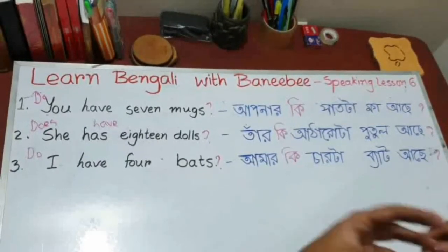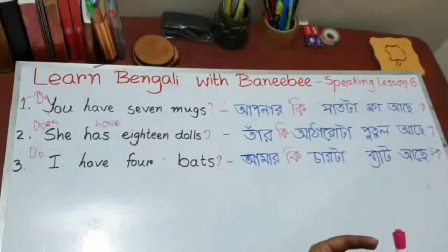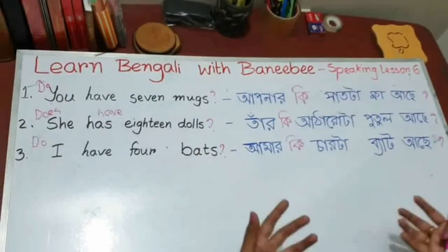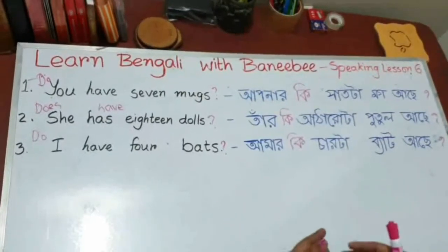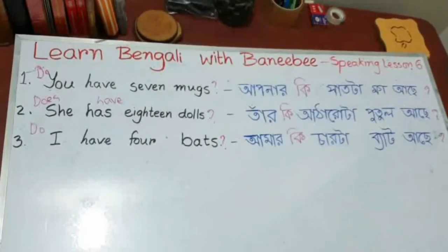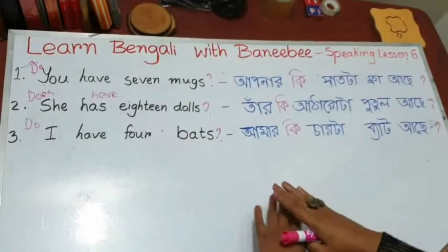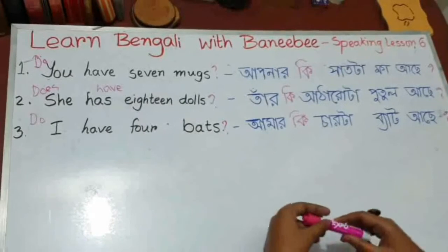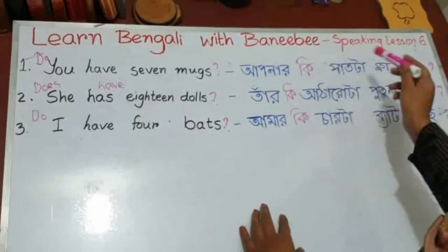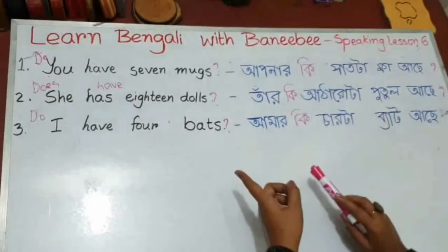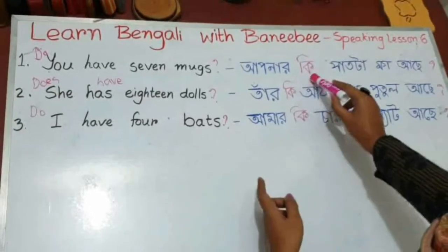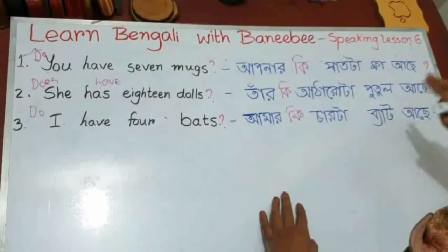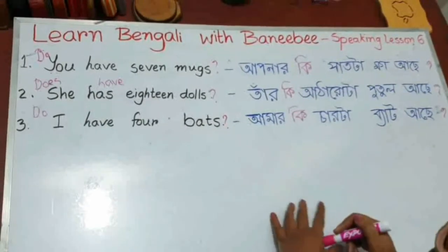So now you know how to talk about owning something — like you have something, I have something, he has something. You already know how to make those statements, and also how to ask questions with the same type of sentences. Just add 'ki', or even if you don't add 'ki', just work on your tone and it will be a question.